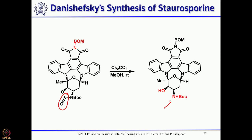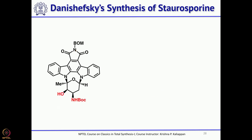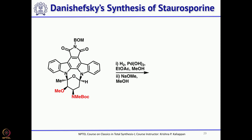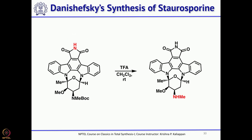The NH should be made into NHME — the BOC should be removed and methylation performed. This was done by treating with sodium hydride and dimethyl sulfate to introduce the methyl group. After introducing the methyl group, hydrogenolysis removed the BOM group, and treatment with TFA (trifluoroacetic acid) removed the tert-butyloxycarbonyl (BOC) group, giving NHME and OMe. Only one thing is left: selectively converting the carbonyl to CH2 to complete the total synthesis.